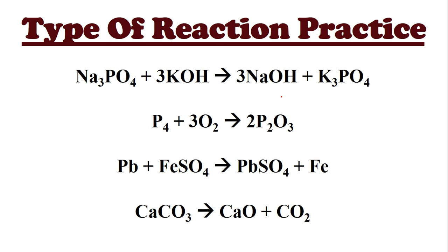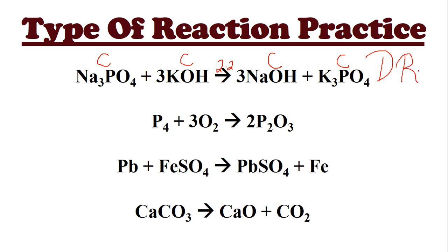Let's look at some examples. The arrow divides things in half. For the first example, there are two items on the left and two on the right — a two-to-two — which narrows it down to either single replacement or double replacement. Labeling each: Na3PO4 is a compound, KOH is a compound, NaOH is a compound, and K3PO4 is a compound. When all four things are compounds, we call that a double replacement, abbreviated DR. For the second example, we have P and O2 on the left and P2O5 on the right — two items becoming one. When you have a two-to-one, we call this a synthesis.